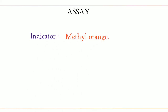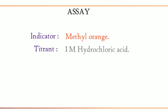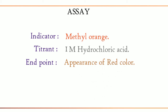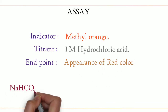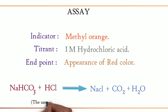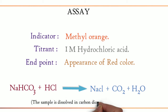Moving on to assay. The indicator used is methyl orange. The titrant is 1M hydrochloric acid. The end point is the appearance of red color. The equation is: NaHCO3 + HCl gives NaCl + CO2 + H2O. The sample is dissolved in carbon dioxide-free water.